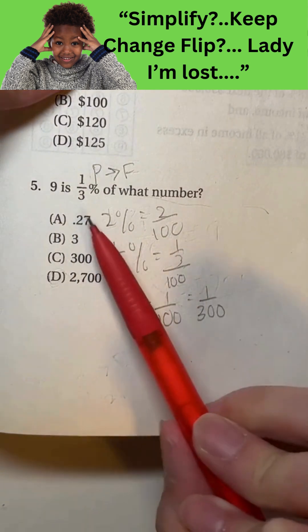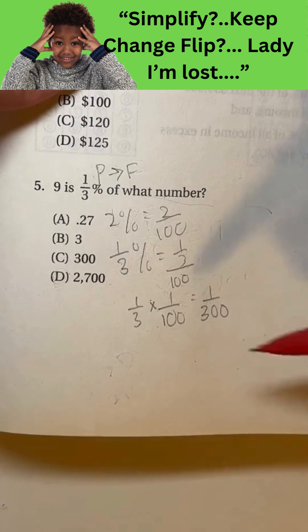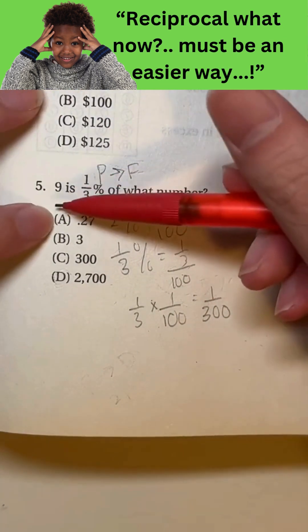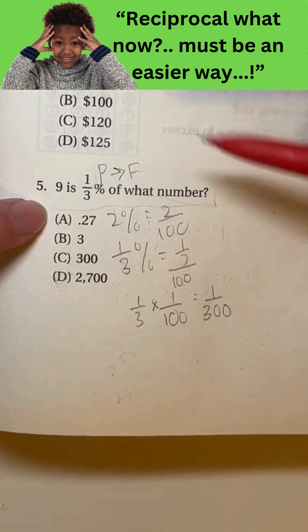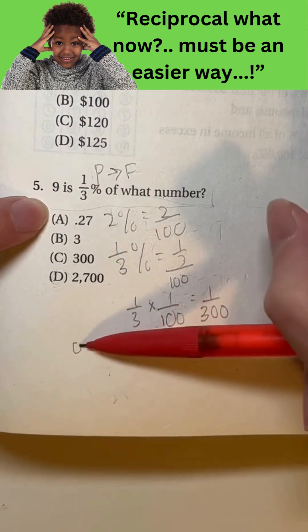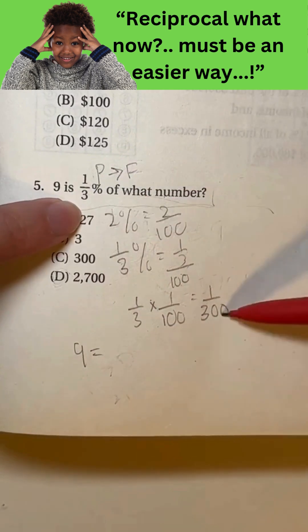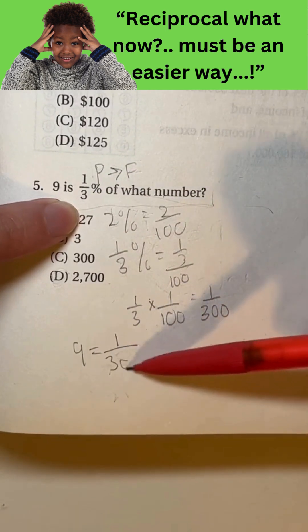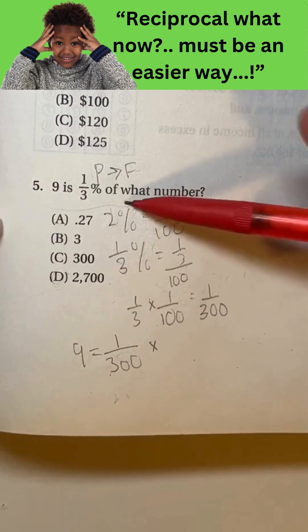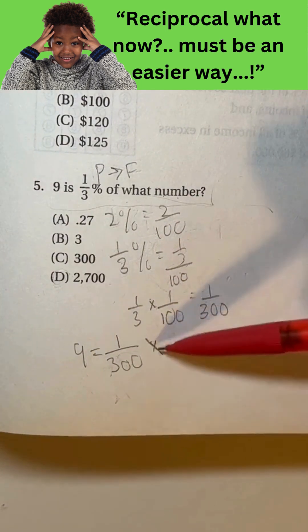So instead of 1 3rd percent, we could rewrite that as 1 over 300. So let's change this statement. 9 is, that means 9 is equal to 1 3rd percent is 1 over 300 of means multiplying one number. So I'll call that number X.